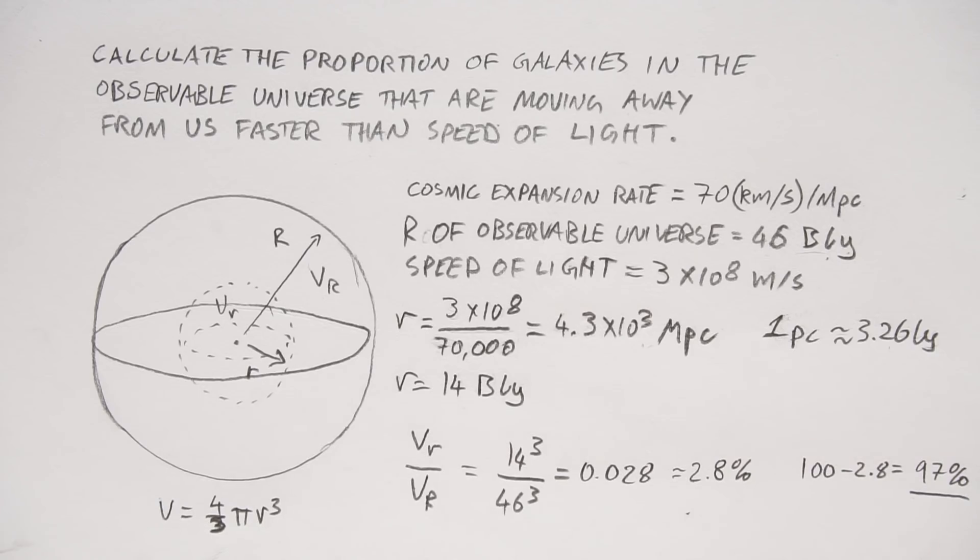So that's the answer. 97% of the galaxies in the observable universe travelling away from us faster than the speed of light.